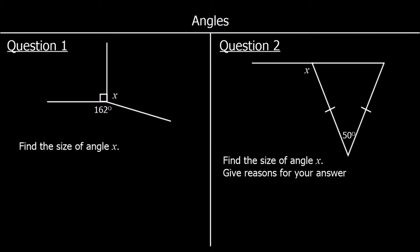Angles. In the first question we have angles around a point. Angles around a point always add up to 360 degrees — the whole way around is 360 degrees. We need to find a missing angle called X. This square symbol means it's a 90 degree angle, a right angle.